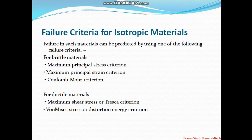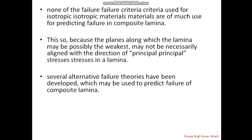If these maximum stresses are greater than the ultimate strength, it indicates failure of the material. Failure of such material can be predicted using maximum principal stress criteria, maximum principal strain criteria, and for ductile materials we have the Tresca theory and distortion energy theory. However, none of these failure criteria can be used for composite lamina, because the weakest direction of the lamina might not be aligned with the direction of the principal stresses.